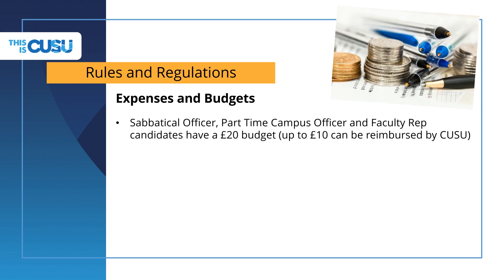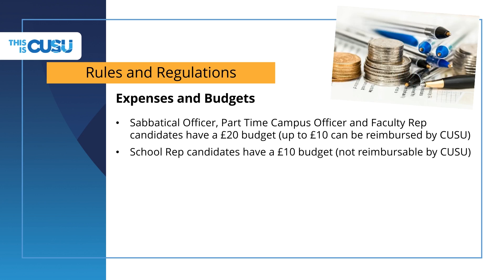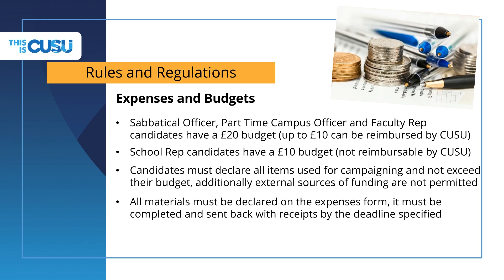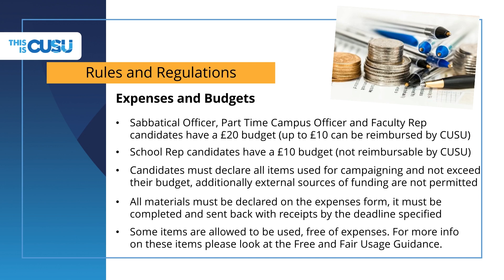Sabbatical officers, faculty officers and campus officers have an expenses limit of up to £20, of which up to £10 can be reimbursed by KUSU. School education reps and campus welfare, education and activity officer candidates will have an expenses limit of £10, none of which can be reimbursed. Candidates must declare all items used for campaigning and must not spend more than their expenses limit. An expenses claim form is made available to all candidates through the KUSU elections team; it must be completed and sent back with receipts before voting opens. Already-owned equipment, reasonably assumed to be accessible to other candidates, is permitted without deduction from expenses.